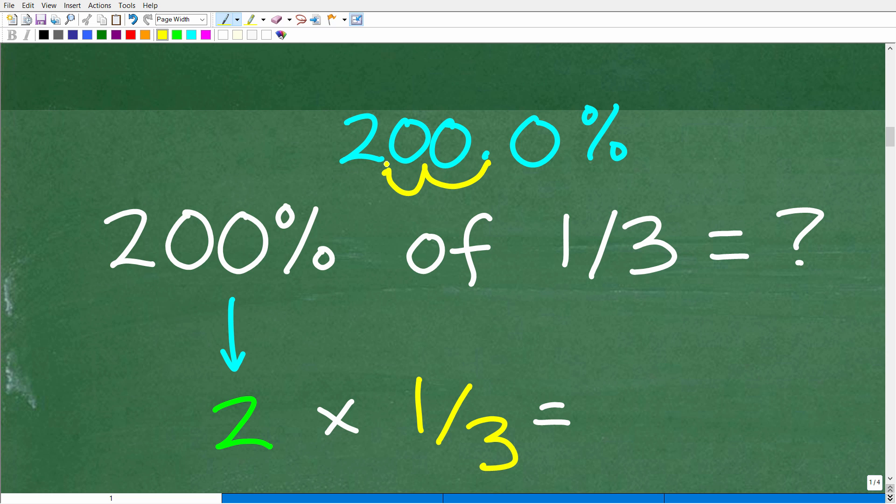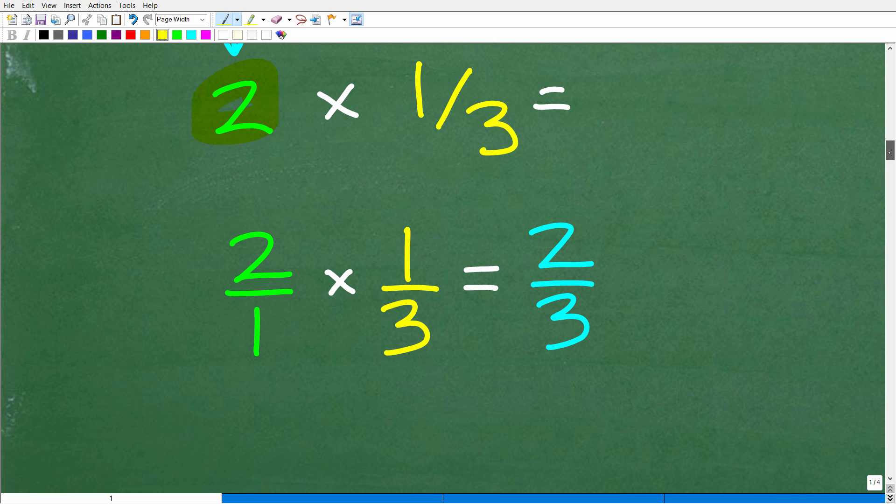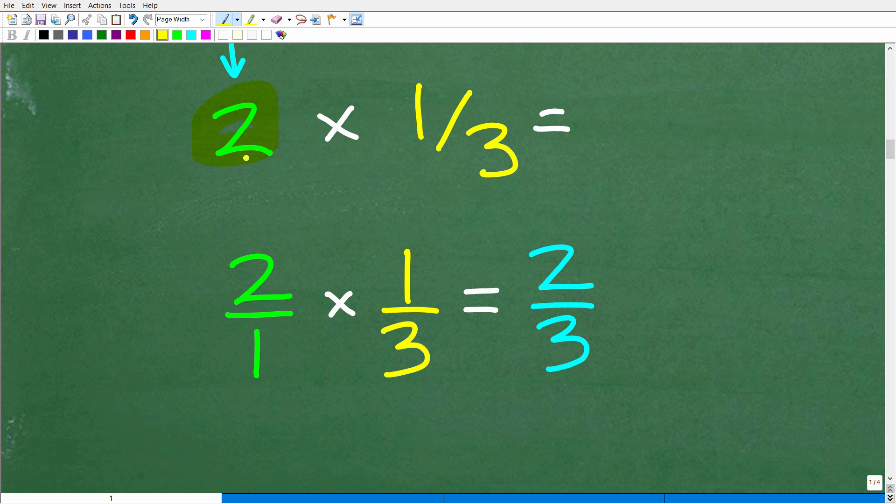Okay, so 200% as a decimal is 2.0 or as a number is 2. So now this problem is super easy, assuming you understand how to work with fractions. So 200% as a number or decimal is 2. So the question now is 2 times 1/3. So how do we multiply fractions? Very easy. All we need to do is write this number as a fraction. So we'll put that over 1. So 2 over 1 times 1/3 or 2 times 1/3 is 2/3.